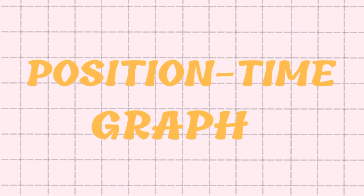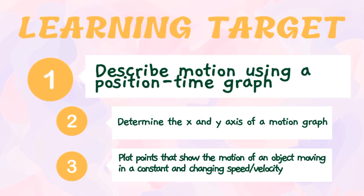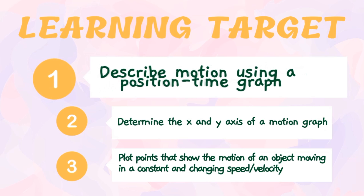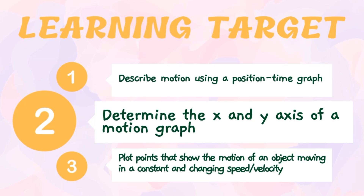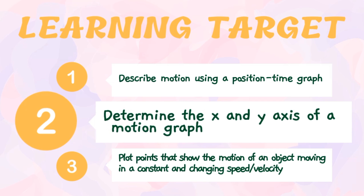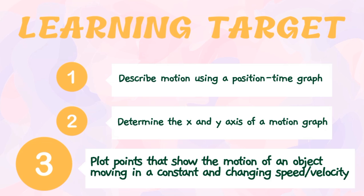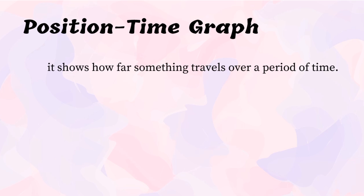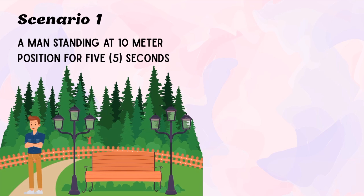For today's lesson we will illustrate motion through the use of position-time graphs. Our learning targets are: first, to describe motion using a position-time graph; second, to determine the x and y axis of a motion graph; and third, to plot points that show the motion of an object moving at constant and changing speed or velocity. A position-time graph shows how far something travels over a period of time. It is the representation of speed or velocity when we indicate the direction of the moving object.